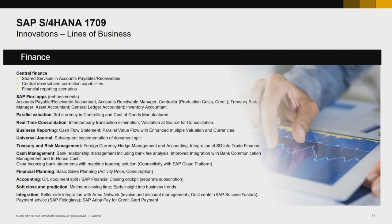My third point is cash management, which is relevant for all customers. Valuable new capabilities include bank relationship management, integration with bank communication, and integration with machine learning capabilities. More innovations are listed, like treasury. Integration to other systems is in focus too — Ariba Network, Ariba Pay, SuccessFactors, Fieldglass. Many Fiori apps are enhanced, like accounts receivable, accounts payable, treasury managers, and inventory accountants, just to name a few.